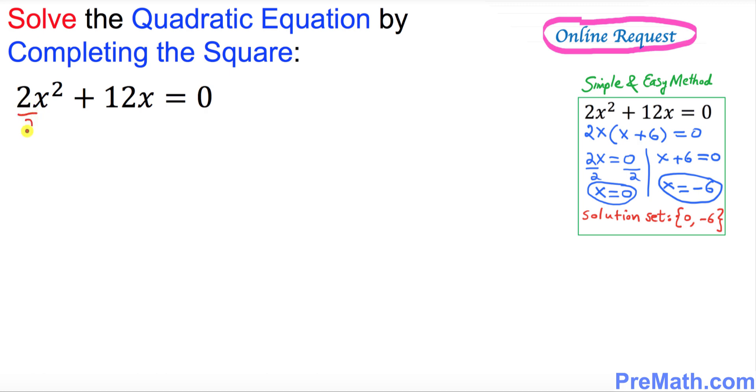So we're going to have 2 and 2 cancels out, we got x² plus 6x equal to 0.